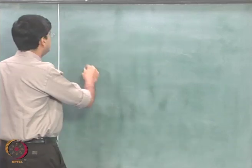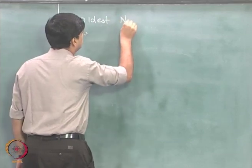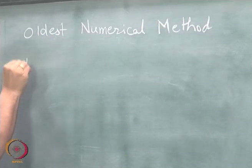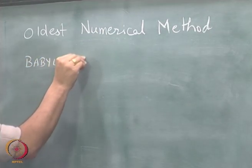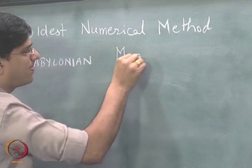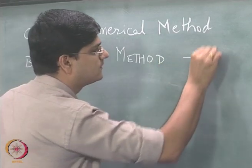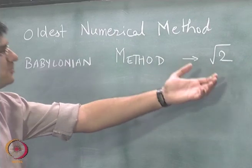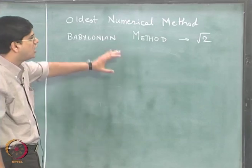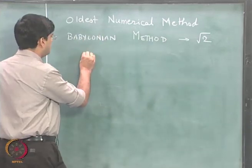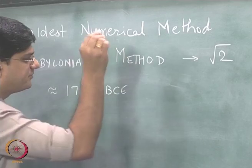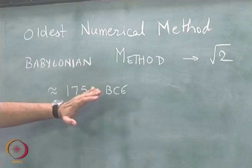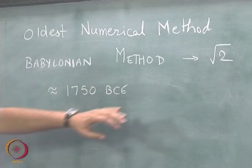Arguably the oldest numerical method is perhaps the Babylonian method to find the square root of 2. Nowadays finding the square root of 2 is fairly simple — you take a calculator and punch a couple of keys. But if you go back approximately 1750 BC, essentially 3700 years back, that was the time when these people developed an approximate method for finding the square root of 2.